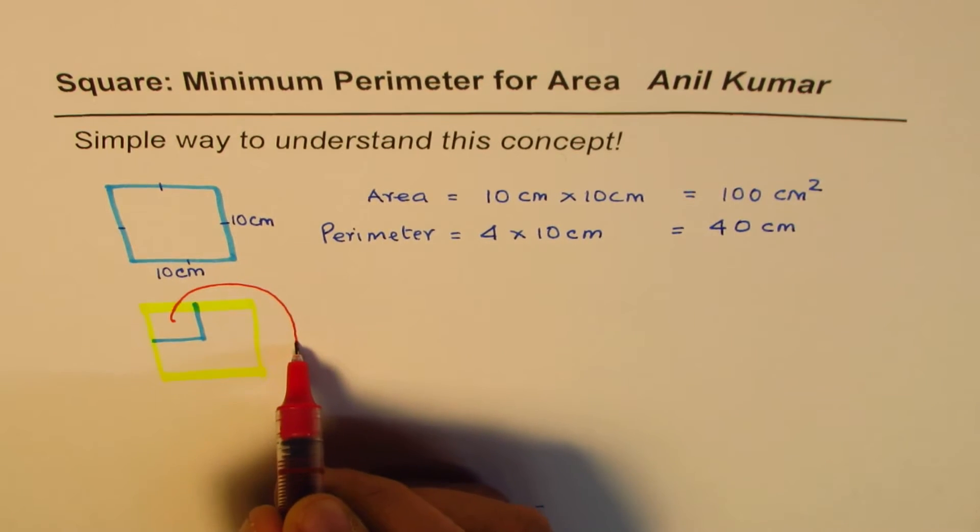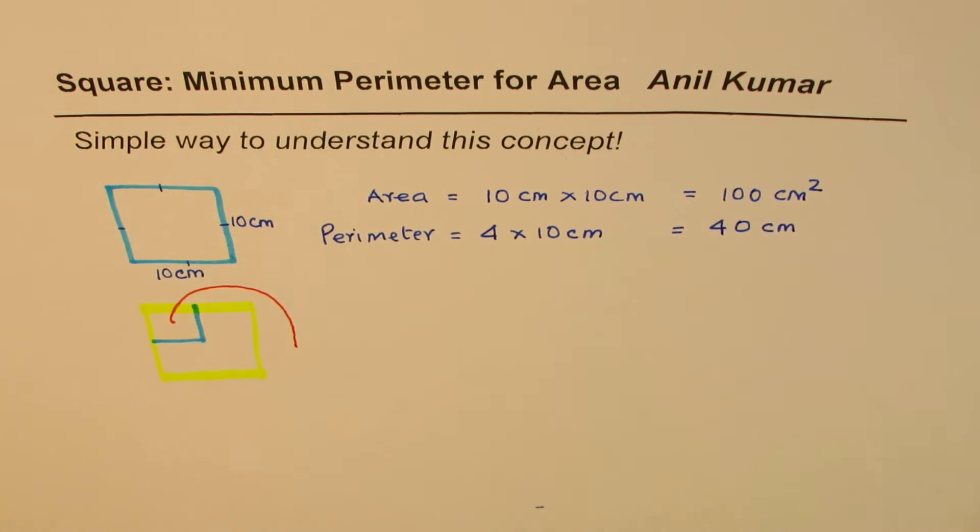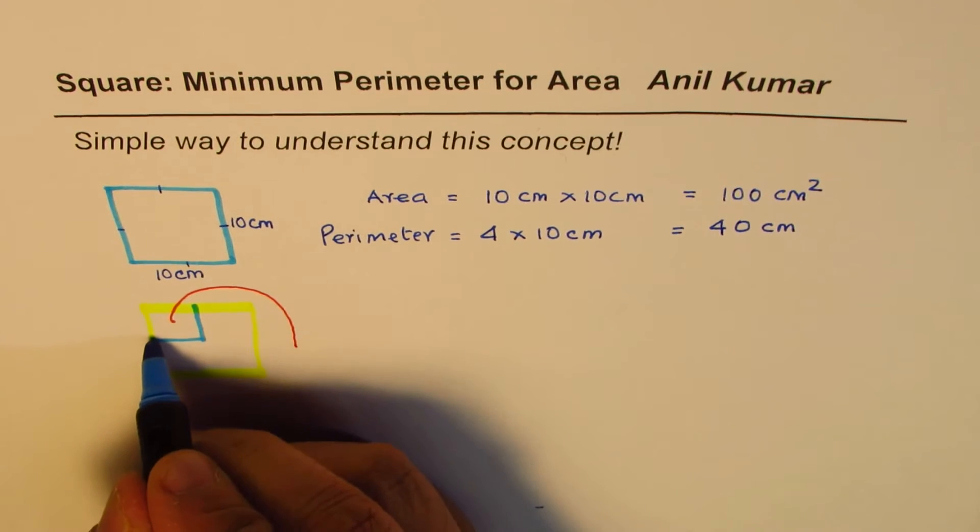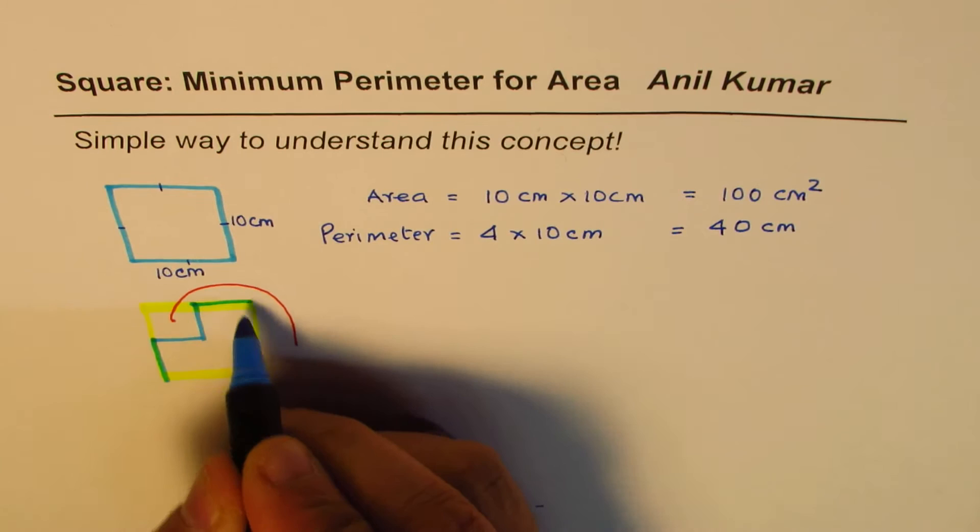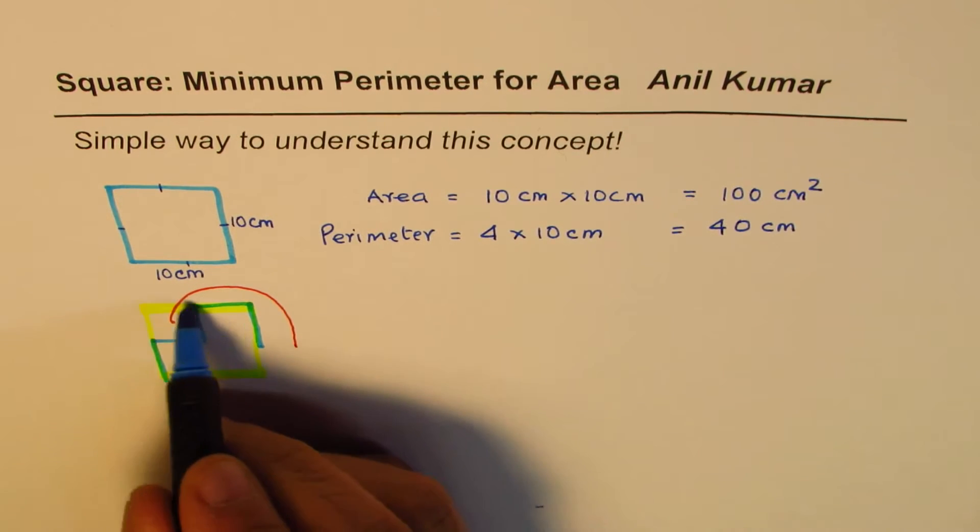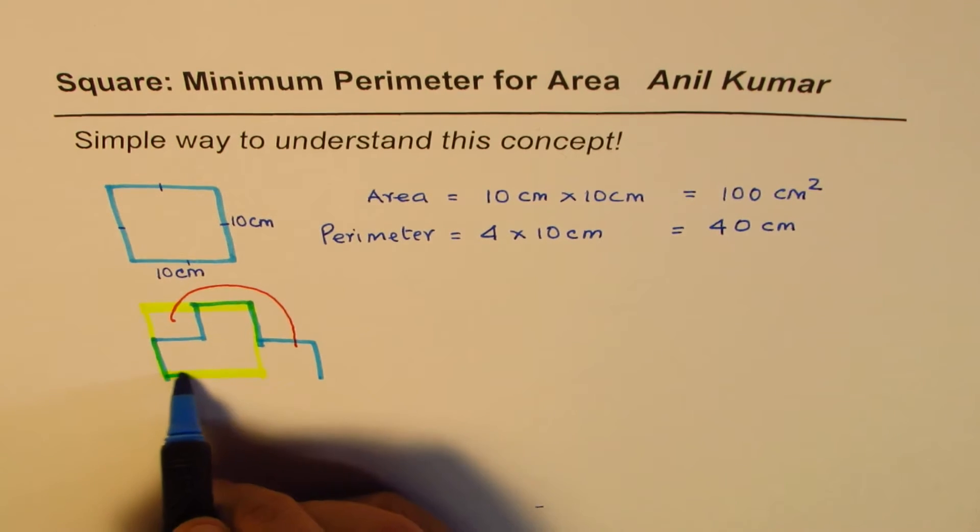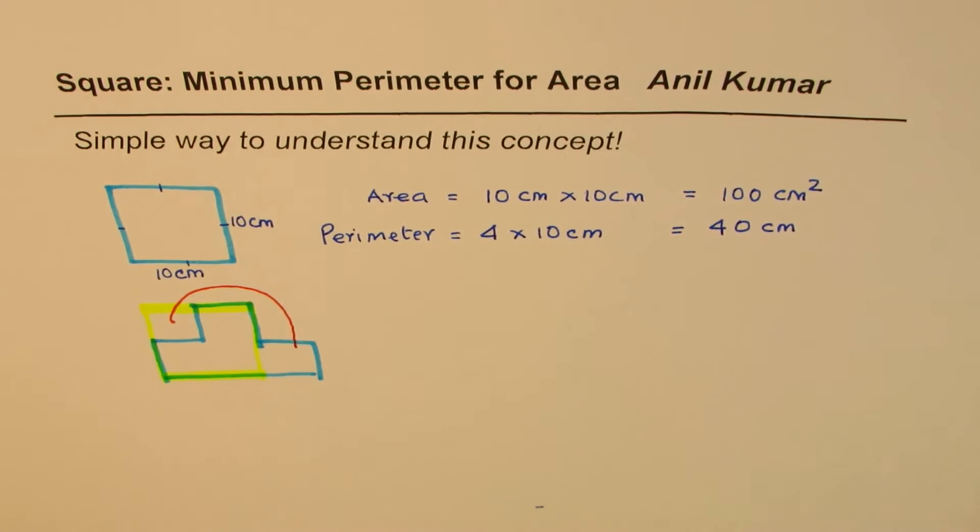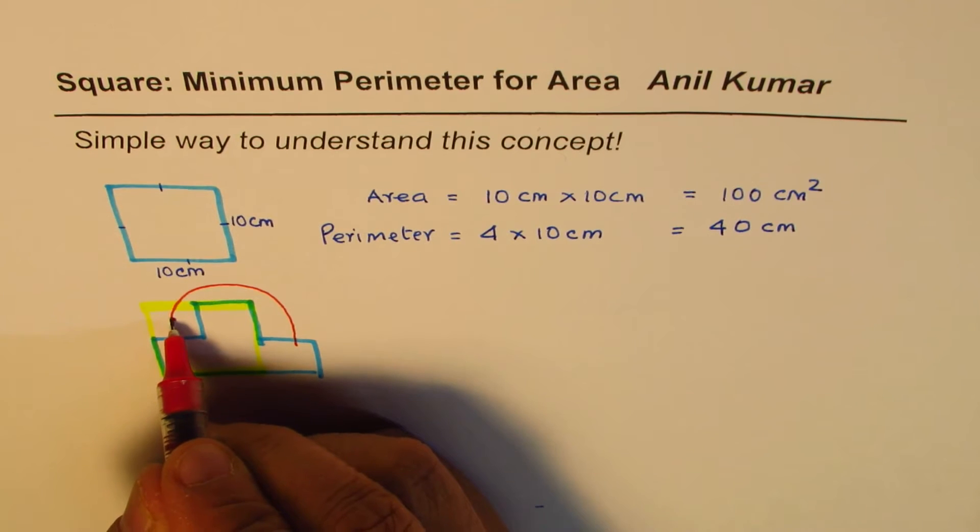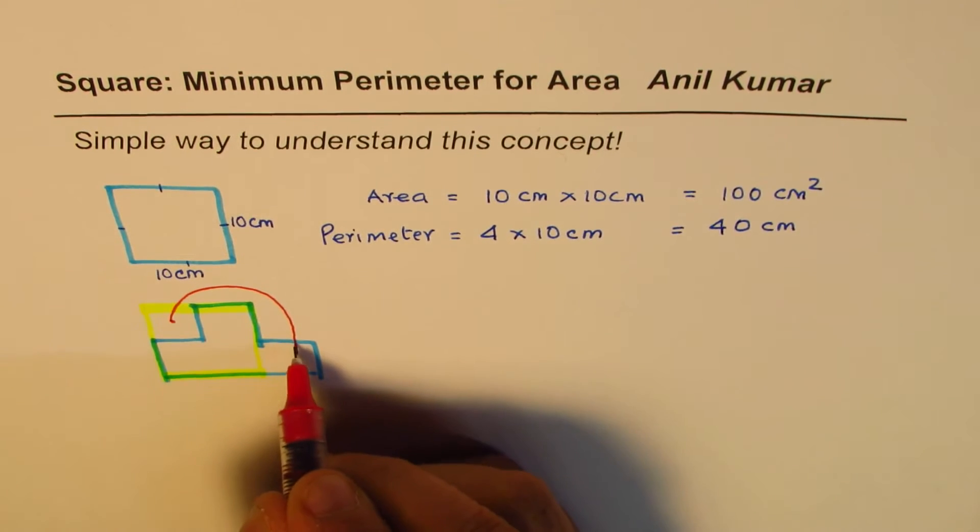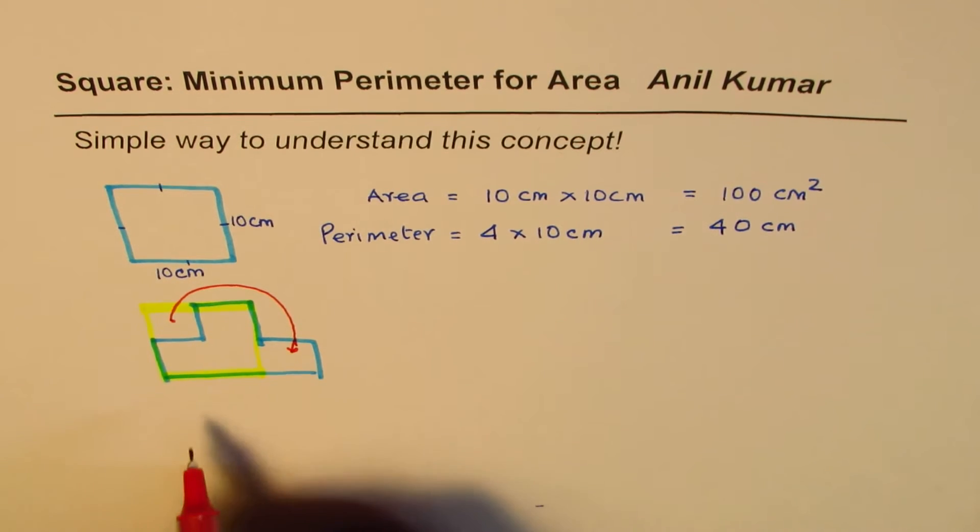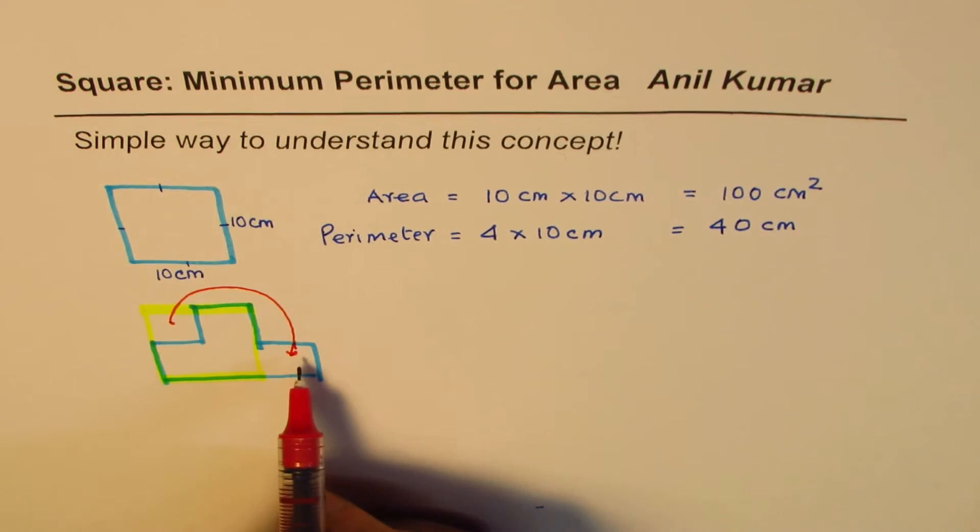So what happens actually is that this is my square, right? I will cut this square and place it here. Do you see that portion? So what I have done here is that I have removed this portion and placed it at this place. When I do so, area is the same.